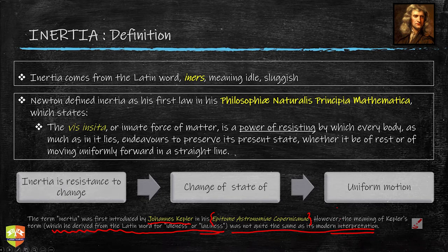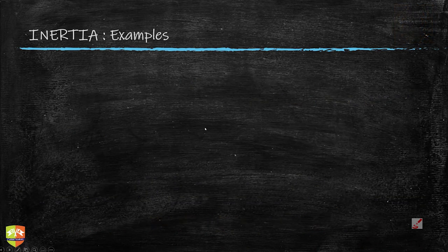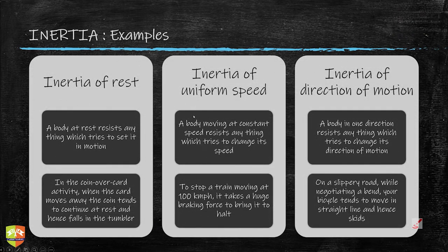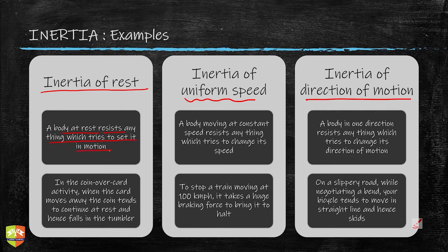Now let's look at examples covering the three types of inertia: inertia of rest, inertia of uniform speed, and inertia of direction of motion. Inertia of rest means a body at rest resists anything which tries to set it in motion. In the coin-over-card activity, when the card moves away the coin tends to continue at rest and hence falls into the tumbler — it doesn't want to move from its place.